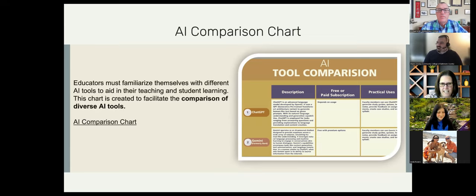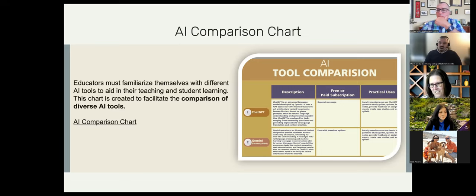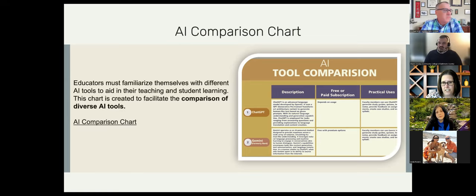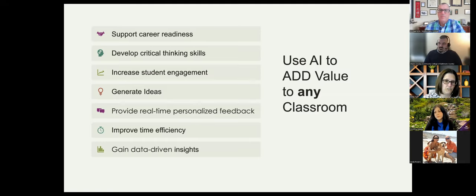Our next step was to come up with an AI comparison chart. A lot of faculty I've spoken with really haven't played around with any of the GPTs out there. The best way to teach students how to use it ethically is to actually use the tools ourselves. We came up with this tool comparison — the most recent we could compile. These tools are changing by the second, but the chart lists comparisons of what type of GPT each tool is, whether it's free or paid, and the practical uses of each. It covers how AI adds value to your classroom in any modality: face-to-face, online, or hybrid.